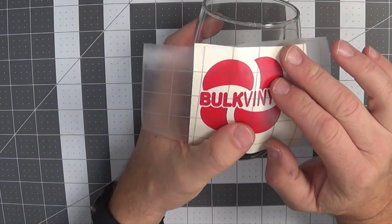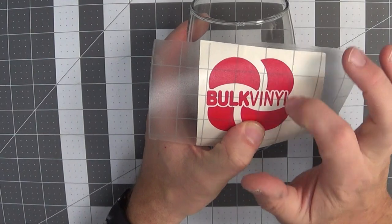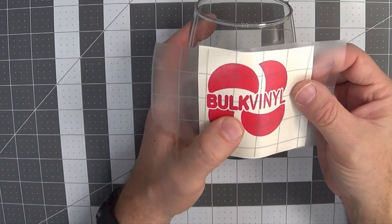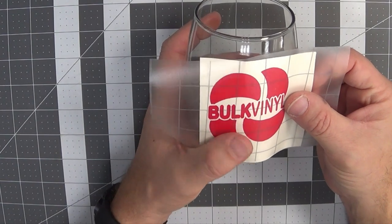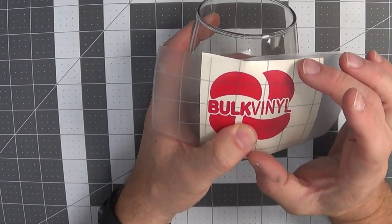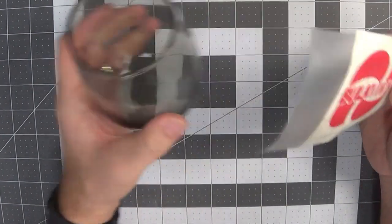What some people do if their design is a little bit larger is they will take scissors and cut slits in the transfer tape between the pieces of vinyl and allows them to manipulate it a little bit better. In most cases what I tell people is just be careful of how large you make your design because it's much easier to apply a little bit smaller design than it is a larger design to a spherical shape.